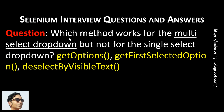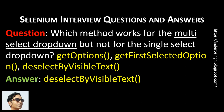Which method works for the multi-select drop-down but not for the single-select drop-down? Is it getOptions, getFirstSelectedOption, or deselectByVisibleText? The deselect methods work only for the multi-select drop-down. So deselectByVisibleText does work for the multi-select drop-down but not for the single-select drop-down.